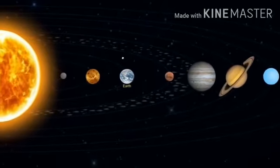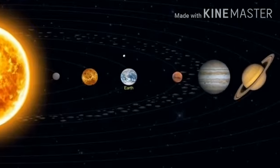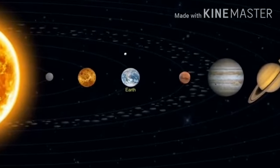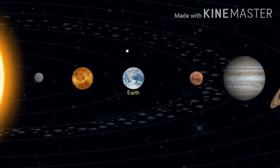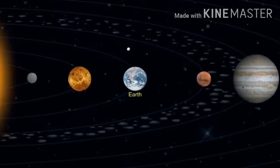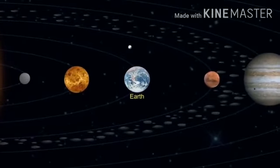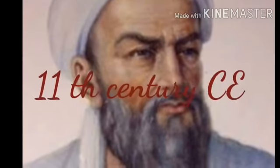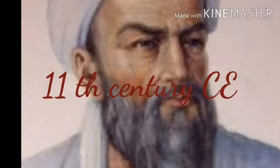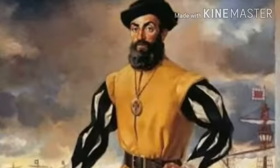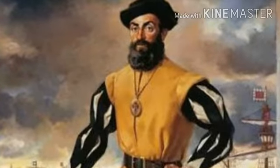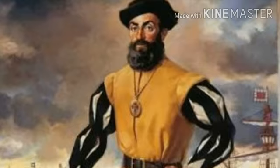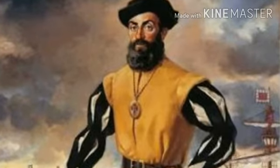We all know we live on Earth. Many years ago, people believed that the Earth was flat. But the Earth is not flat — it is round. Abu Rehan Mohammad bin Ahmad Al-Baruni researched and found in the 11th century CE that the Earth is round. Later, Ferdinand Magellan, a Portuguese explorer, sailed and proved that the Earth is round.